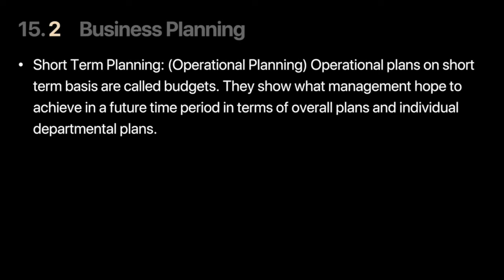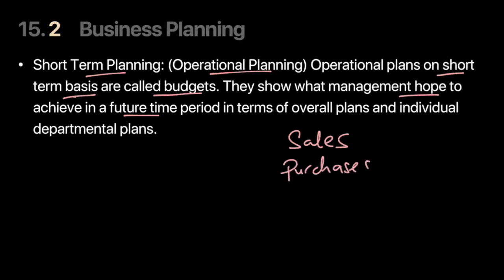Short-term planning, which is also called operational planning, is basically planning for the short-term needs of the business, and these are called budgets. Budgets help management show what they plan to achieve in a future period — say within a year or six months — and how that will influence their strategy. Firms have to budget how much their sales will be, how much their purchases will be, cash inflows and outflows, and what their budgeted income statement and budgeted statement of financial position will look like.